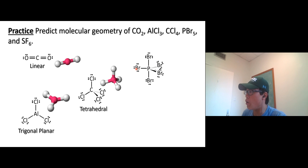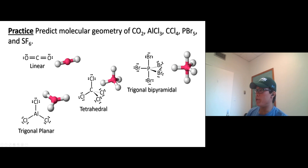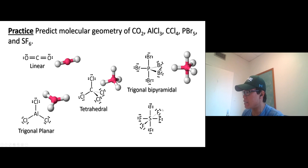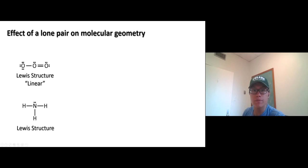...and this structure is called trigonal bipyramidal. All right, and lastly, SF₆—that is octahedral. Okay, all right, moving on.